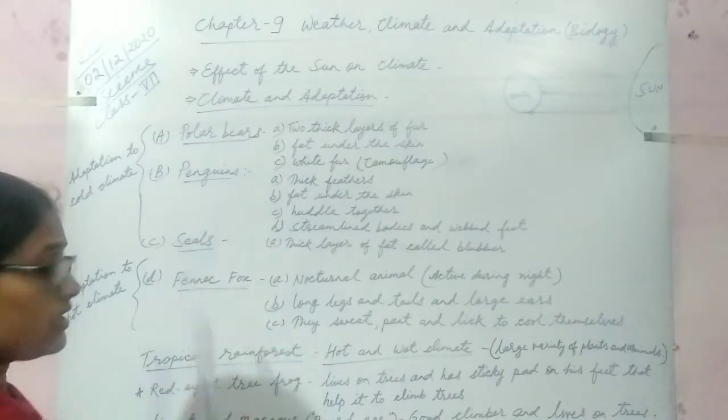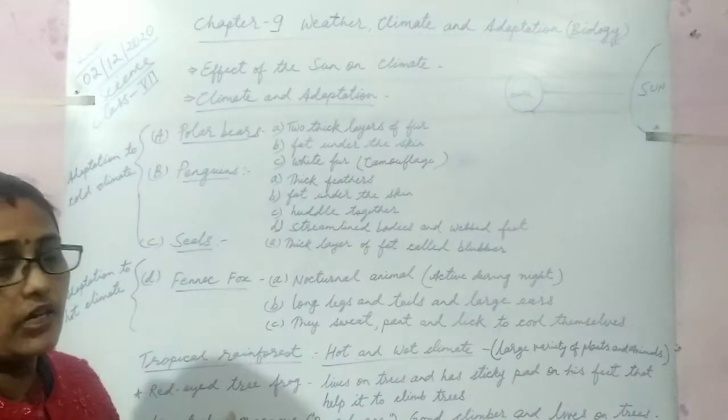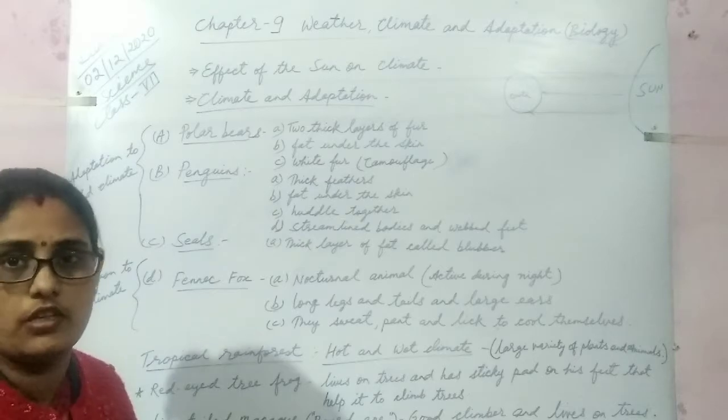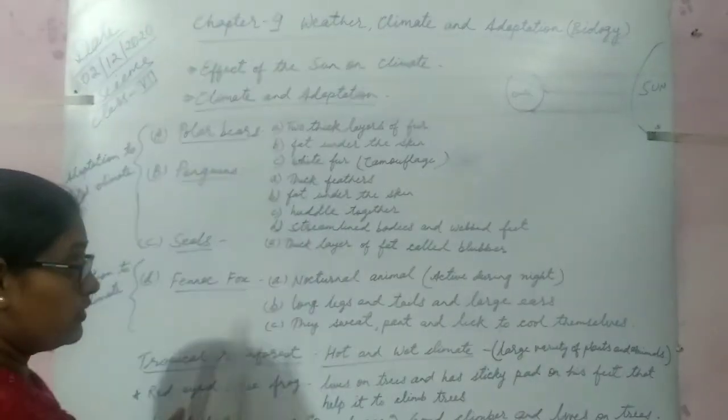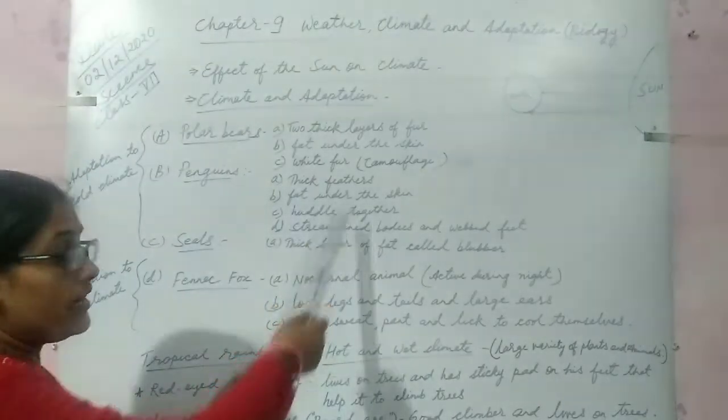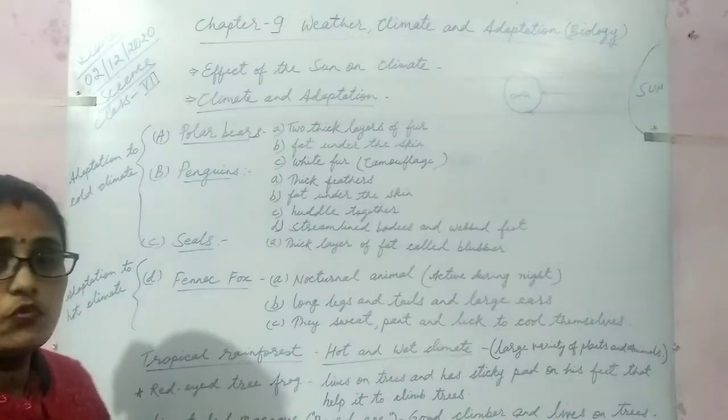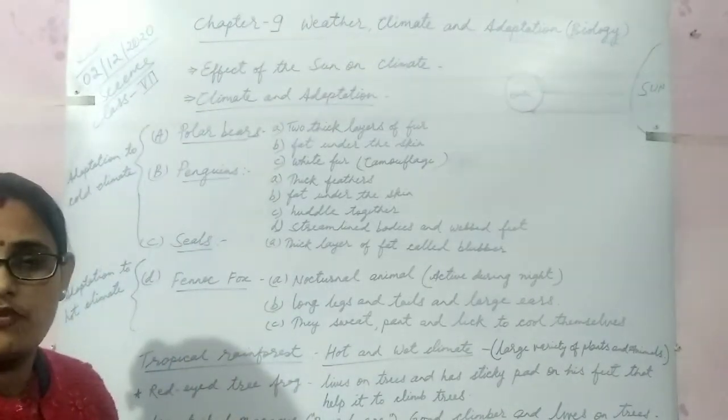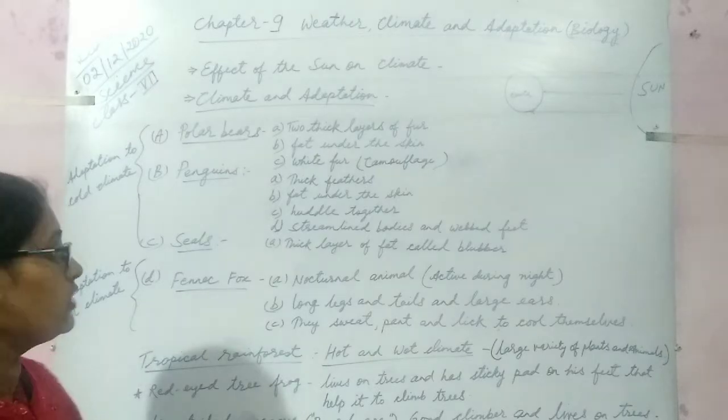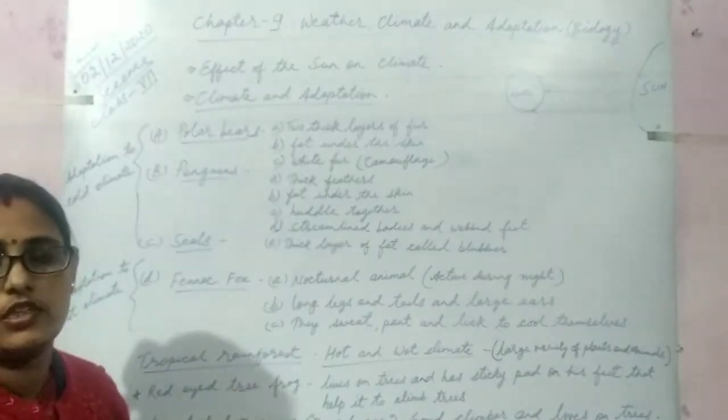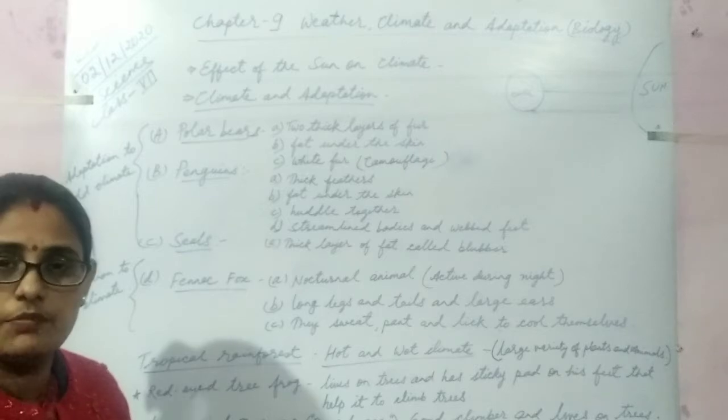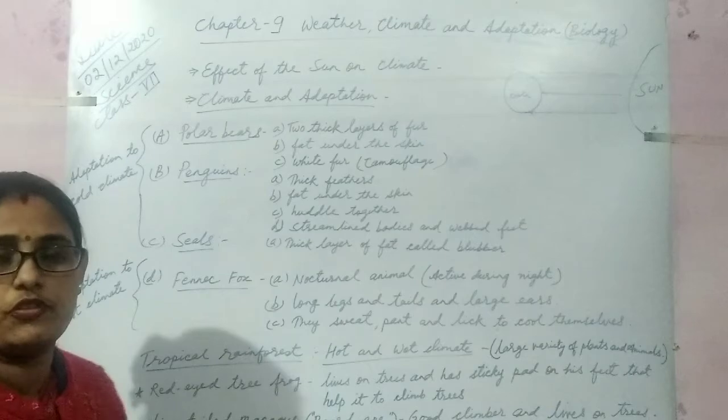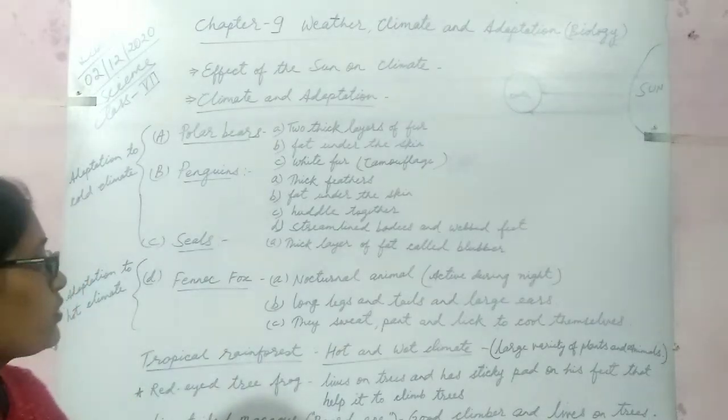The next is penguin. Penguin is another bird which is well adapted to live in polar areas. They have thick feathers, fat under the skin which keeps the body warm. They are found in groups generally. They huddle together to keep themselves warm. They have streamlined bodies and webbed feet which help in proper swimming.